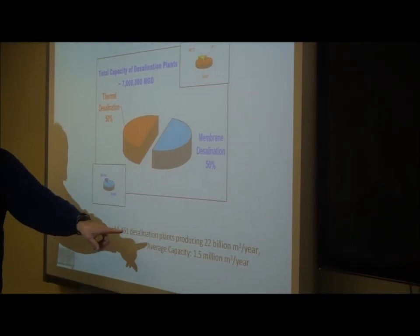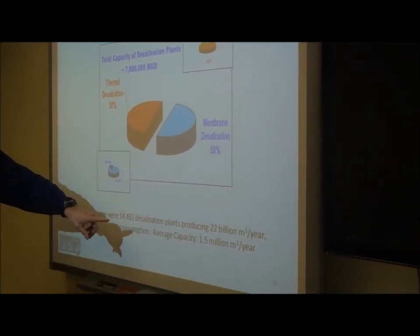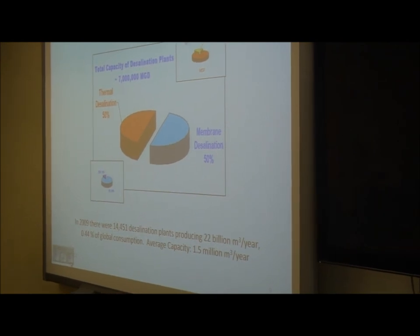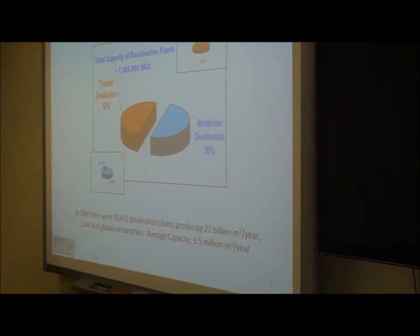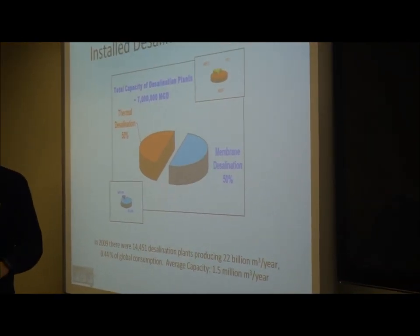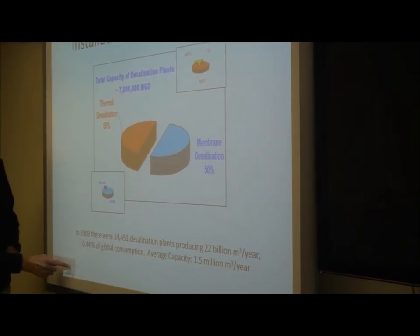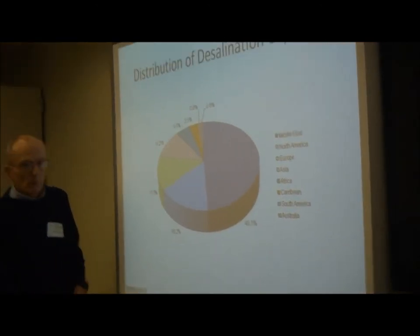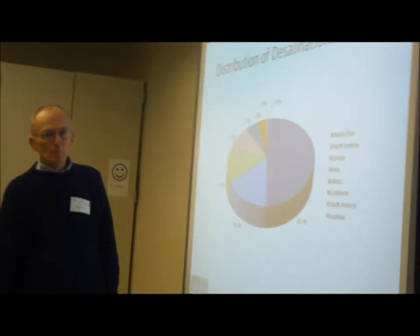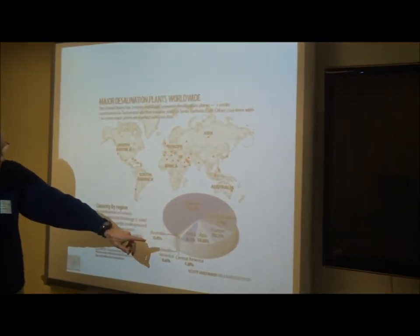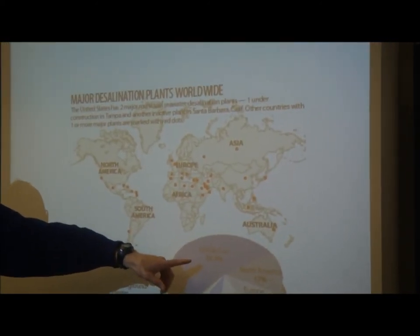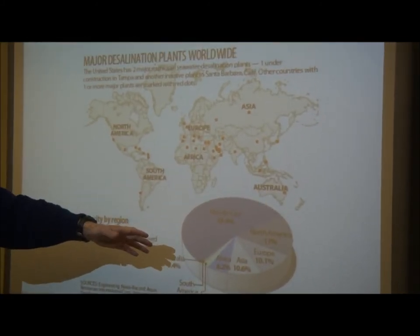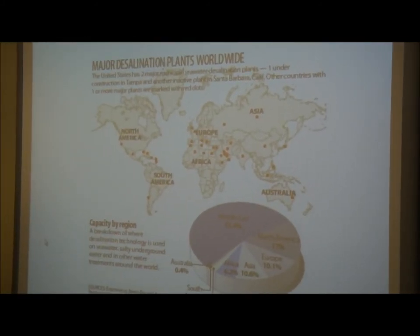The average capacity of these 15,000 plants was about one and a half million cubic meters per year. The Arabian Peninsula is a place where desalination is heavily concentrated — the Middle East accounts for something over 50% of the world's desalination capacity, as shown in more detail on this chart.